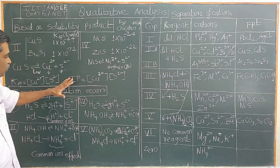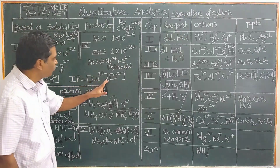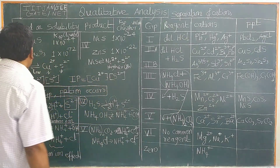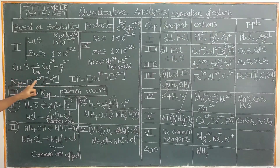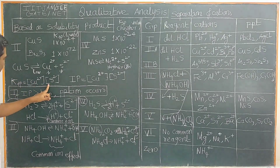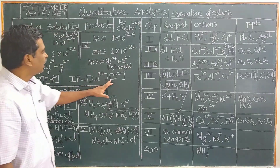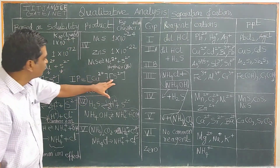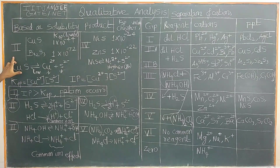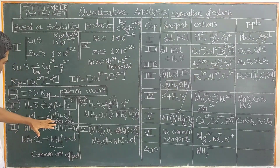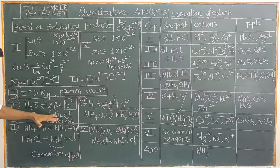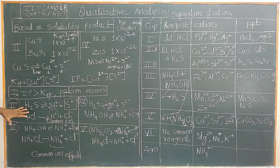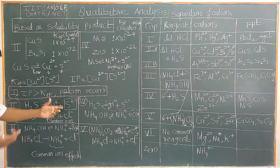Therefore, more sulfide ions combine with H⁺ to form undissociated H₂S, resulting in a lower concentration of sulfide ion in the medium. This low concentration of sulfide ion, combined with the ionic product (concentration of copper ion × sulfide ion), means that because the solubility product of second group sulfides is already very low, even this small sulfide ion concentration is sufficient to precipitate second group cations but not fourth group cations.